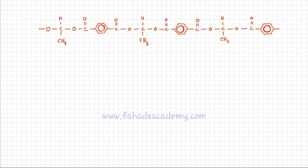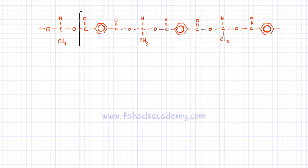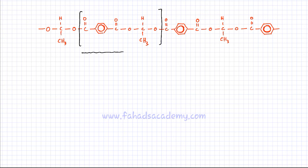Here is another polyester chain. You can see there are ester links joining the monomers together. I want to figure out the repeat unit, so I'll start at this point. Looking carefully, C double bond O followed by a benzene ring starts and reappears at this point. So I need to end the repeat unit before that C double bond O. This repeat unit is going to be repeated again and again in the chain — you can clearly see it repeating over and over.